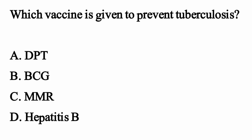Which vaccine is given to prevent tuberculosis? The correct option is Option B, BCG.